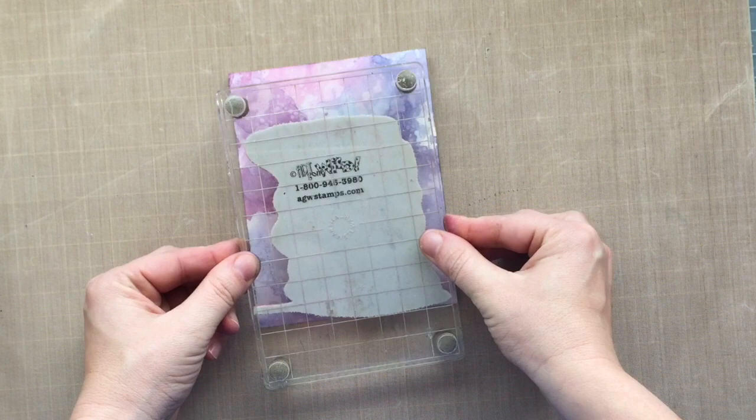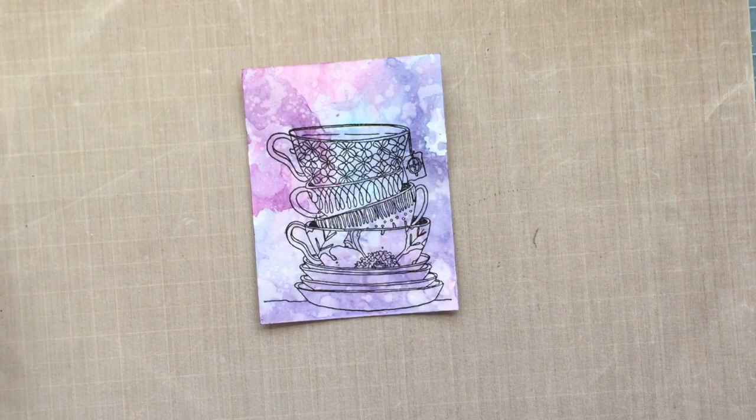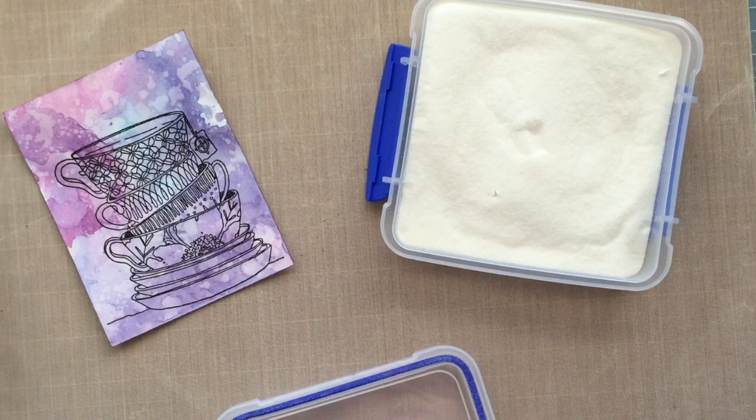Now I'm using a pigment ink on purpose because I'm going to go ahead and heat set this image because I really want these black lines, outlines of this image to just jump off the page. And when you use a pigment ink, the pigment ink stays wet longer. So I'm going to sprinkle some clear embossing powder right over my image. You can see how it's completely sticking.